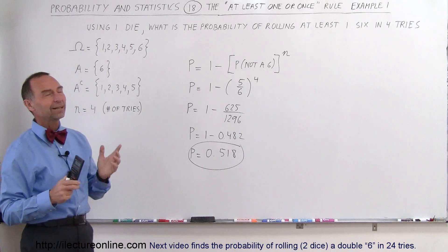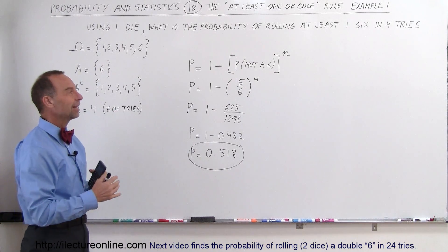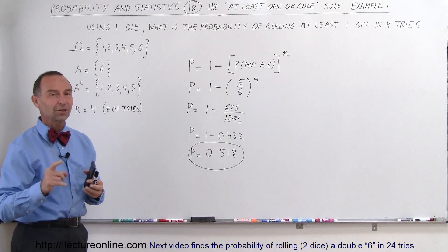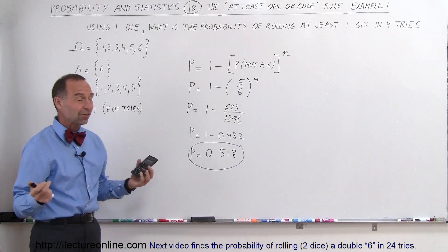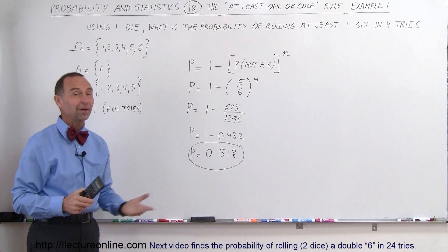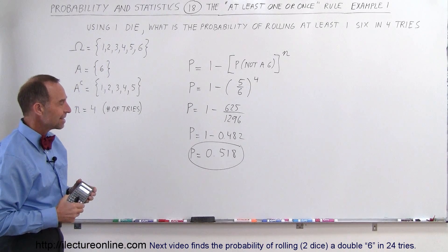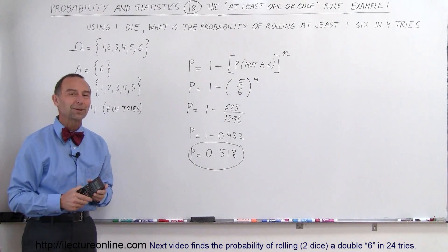There was a person—I forgot their name—that actually went around betting people, saying 'I bet you I can throw a particular number in four tries.' If you put a 50-50 wager on that, eventually you'll start making money because your chances are better than one in two that you'll get the prize. And that's how we use the probability rule.